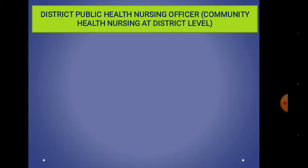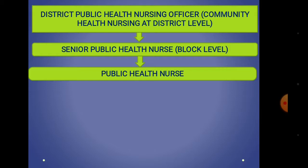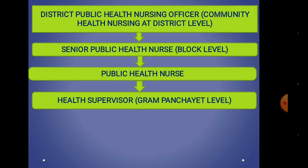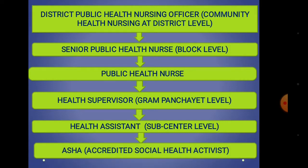Under District Public Health Nursing Officer (DPHNO), at the community level: at the district level there is Senior Public Health Nurse (Senior PHN). At the block level, the next post is PHN — Public Health Nurse. Under PHN there is Health Supervisor at the Gram Panchayat level, and under that Health Assistant at the sub-center level. There are two types of Health Assistant: ANM and ANM. Under these are ASHA workers — ASHA stands for Accredited Social Health Activist — who work with a population of 1,000 to 1,200.